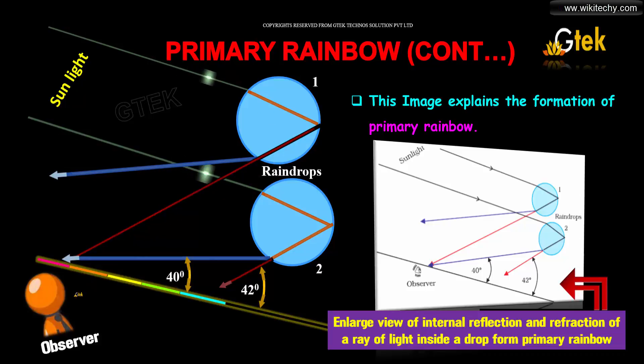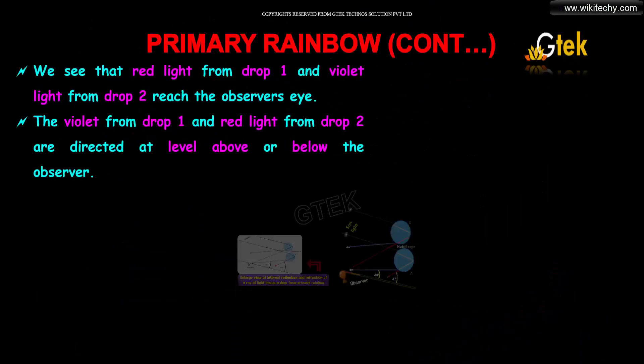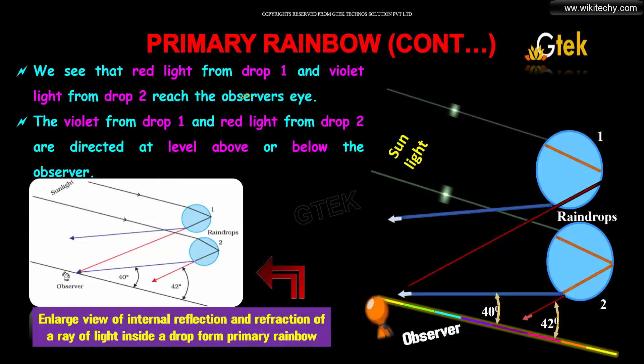Here is the observer. You have 40 degrees and 42 degrees for violet and red light. We see that red light from drop 1 and violet light from drop 2 reach the observer's eye.